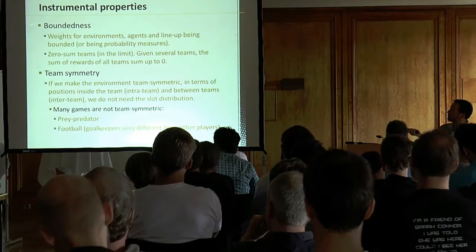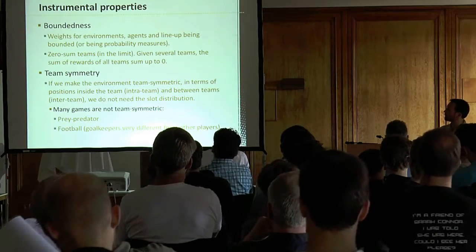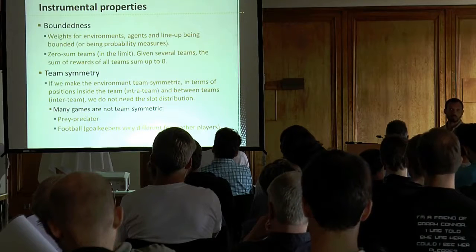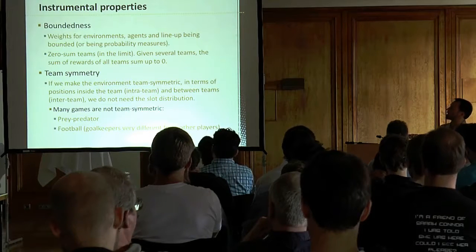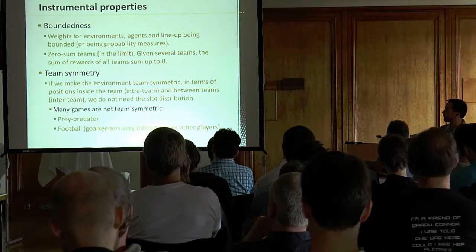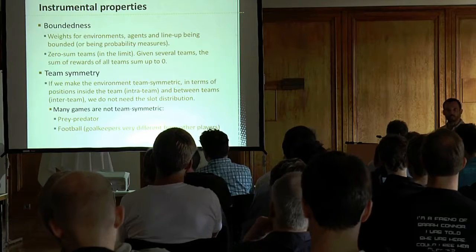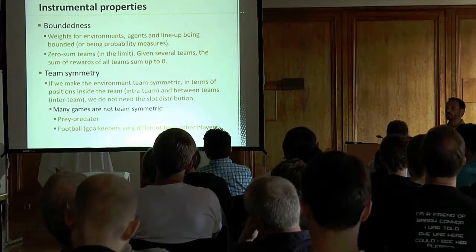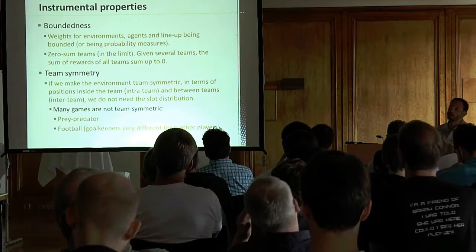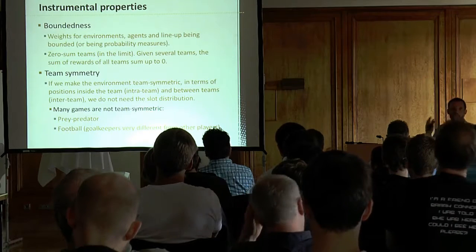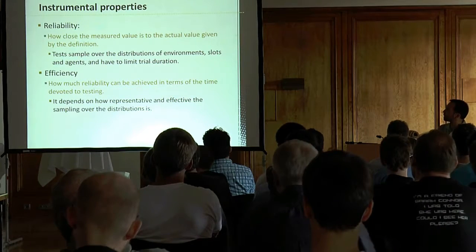Other instrumental properties: we want rewards to be bounded, which is easy. Instead of zero-sum games, we talk about zero-sum teams — an extension of the classical idea to teams. An interesting but non-necessary property is asymmetry: in football, goalkeepers have different available actions from other players. For simplicity in evaluation, we'd prefer games without different positions, so as to avoid confounds of being good at one position but bad at another.